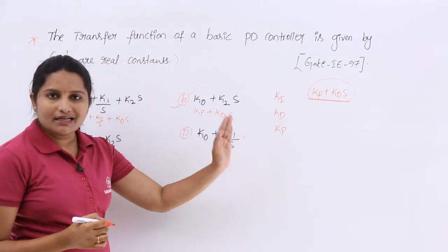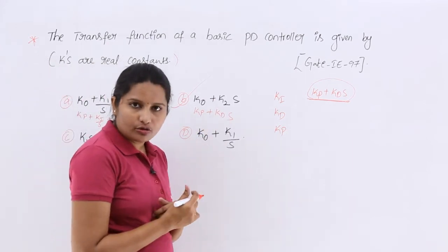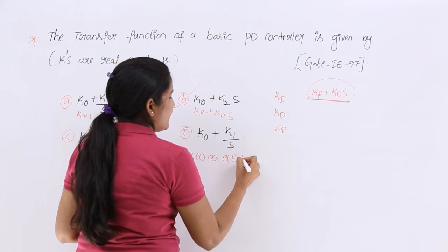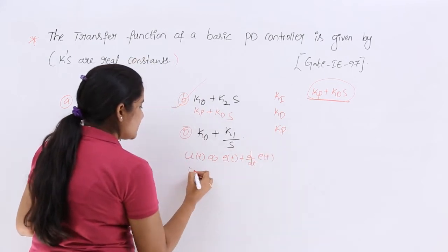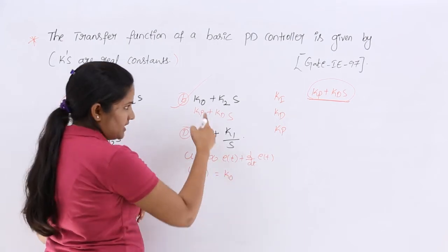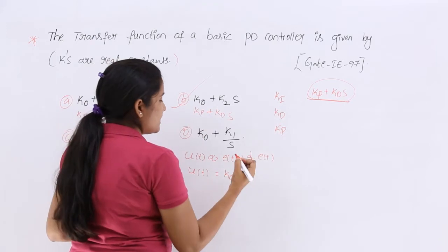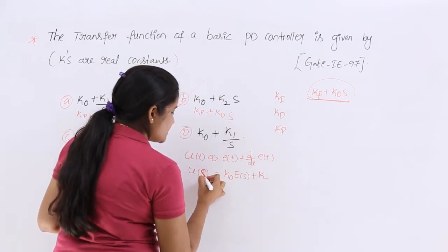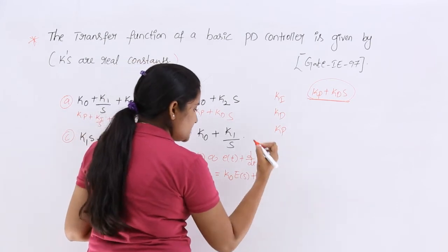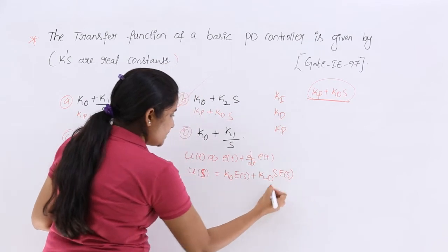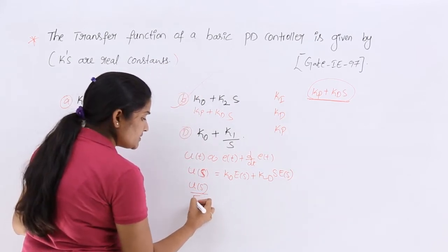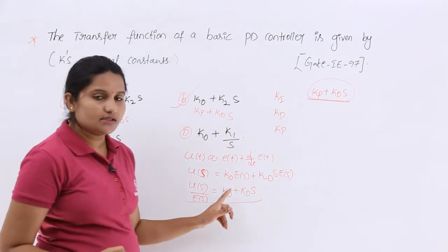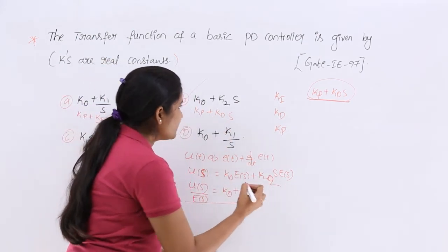This is a proportional derivative controller. For a proportional derivative controller, you need to consider output proportional to error signal and derivative of error signal. For this, you are taking constant as K0. In this case, I am taking the given cases. K0 into E of S plus here, K1. I am taking Laplace transform. Equating K0 into E of S plus Kd into S into E of S. E of S, take it common and send to here. E of S by E of S is equal to K0 plus Kd into S. You are getting like this.